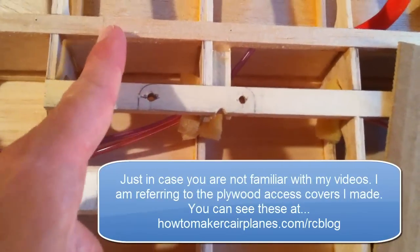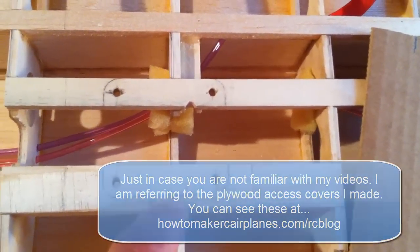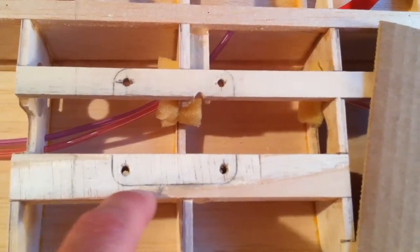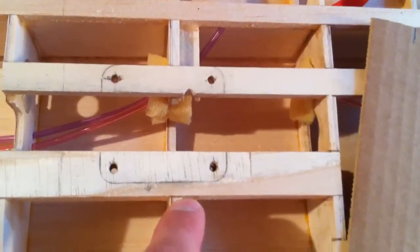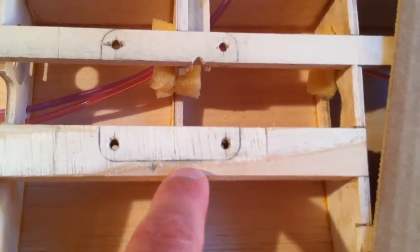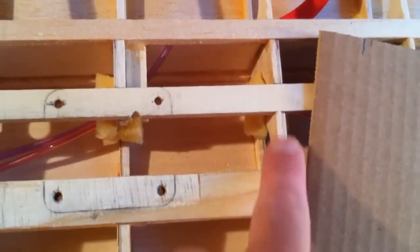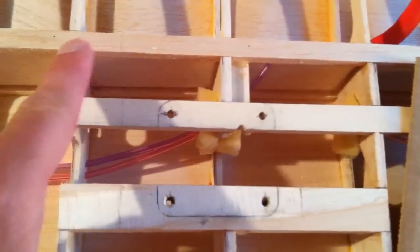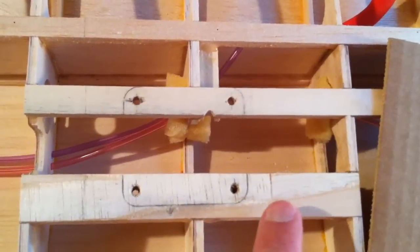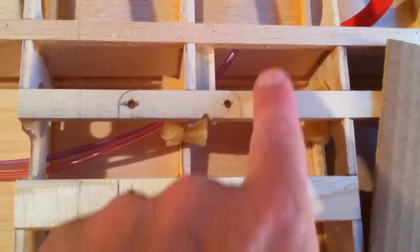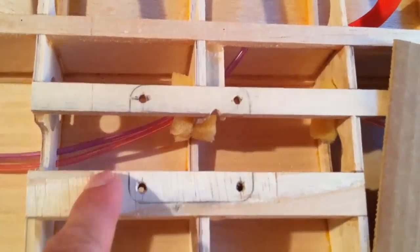I'll cut it only to here and then it will be flush or come to here and then the balsa sheeting will meet it somewhere along this edge of the mounting rail. So it'll come up to here perhaps and come around.